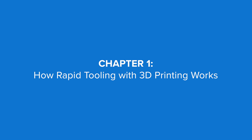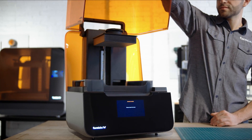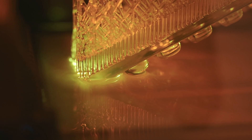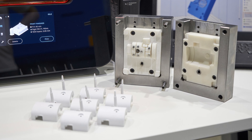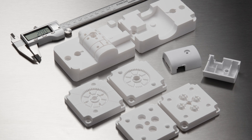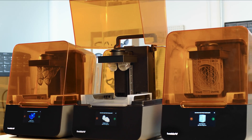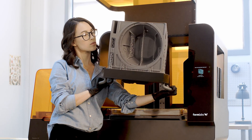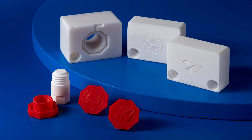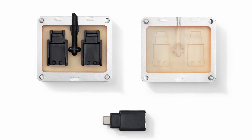How does rapid tooling with 3D printing work? Stereolithography, or SLA, 3D printing technology is a great choice for quickly and cost-effectively producing rapid tooling. Molds, patterns, or dies produced with SLA 3D printers are accurate and have a smooth surface finish, which is transferred to the final part with high precision. Formlabs' ecosystem of accessible 3D printers and high-performance materials can be easily integrated into industrial workflows to fabricate strong, smooth, and highly detailed molds and patterns capable of producing hundreds to thousands of parts.